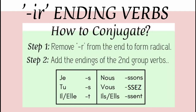To conjugate IR ending verbs, we have to drop the R and we have to add the endings: S, S, T, T, ONS, EZ, ENT.